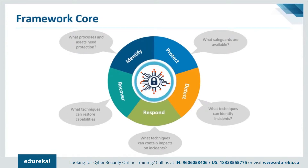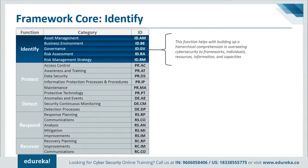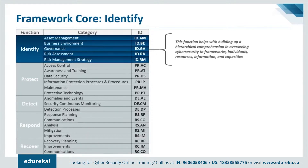The functions are the highest level of abstraction included in the framework, acting as the backbone of the framework core around which all other elements are organized. The first function is Identify, which helps develop an organizational understanding to manage cybersecurity risk to systems, people, assets, data, and capabilities. The activities in the Identify function are foundational for effective use of the framework, enabling an organization to focus and prioritize its efforts consistent with its risk management strategy. Examples of outcome categories include asset management, business environment, governance, risk management, and risk assessment.